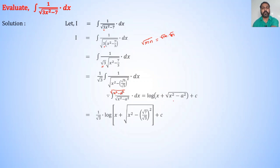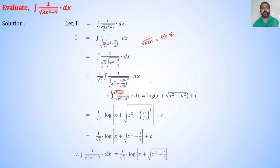Therefore I = (1/√3)·log|x + √(x² - 7/3)| + c. So ∫1/√(3x² - 7)dx = (1/√3)·log|x + √(x² - 7/3)| + c, which is our final answer.